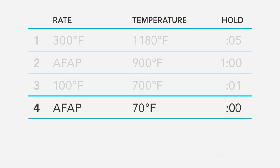The fourth and final segment is the cool to room temperature step. Program the kiln to cool as fast as possible to 70 degrees. Allow the kiln to cool at its natural rate.